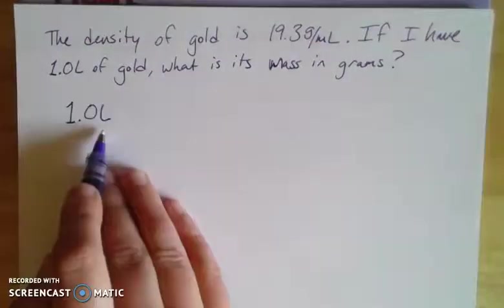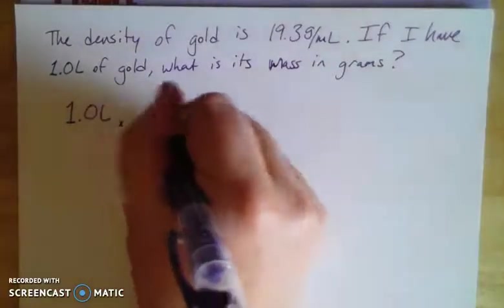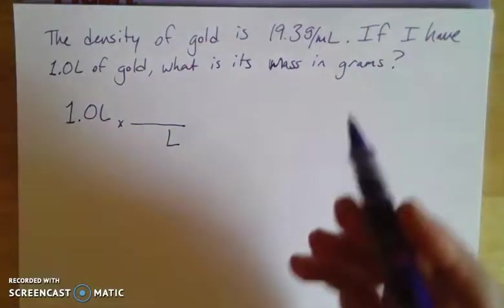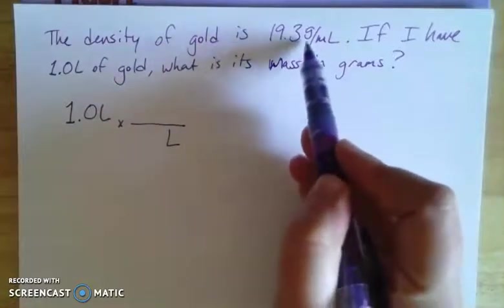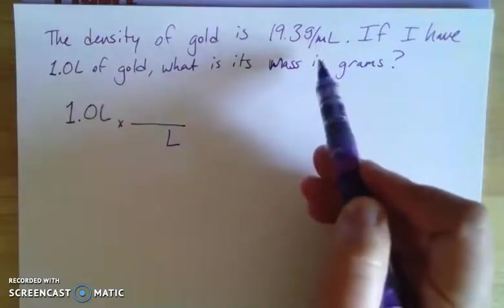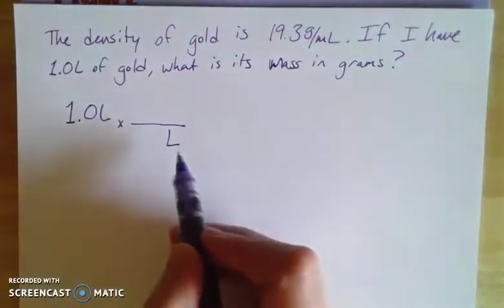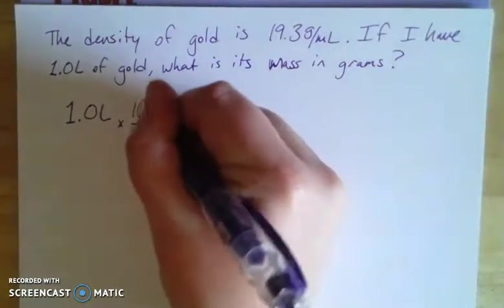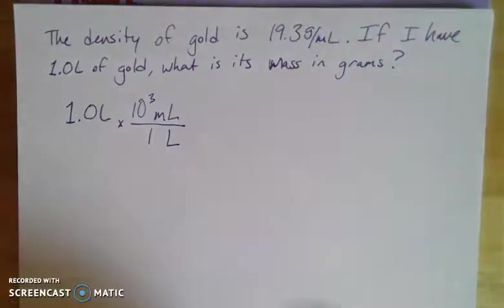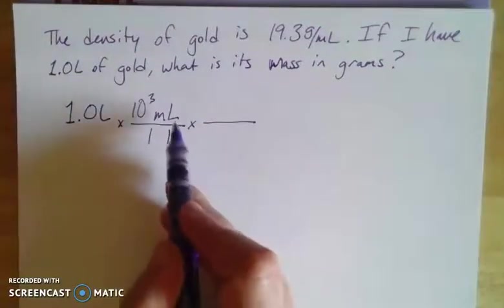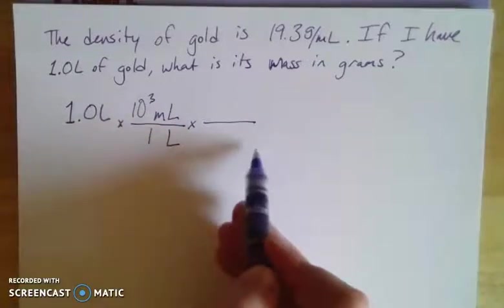I need to find some relationship that's going to divide out the liters but that I can use my density to get me to mass. The mass is in grams, so I need to find something that will get me to milliliters so I can convert from milliliters to grams. In the metric system, I know that in one liter there are a thousand milliliters. That gets me to milliliters and my liters will divide out. Now I need a conversion factor with milliliters on the bottom and mass on the top.